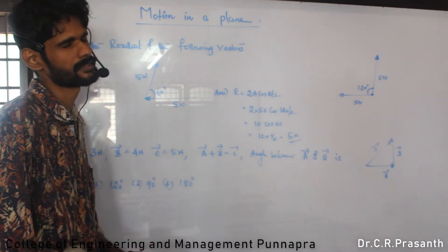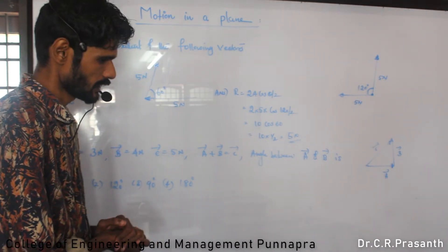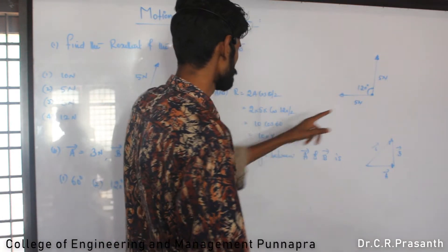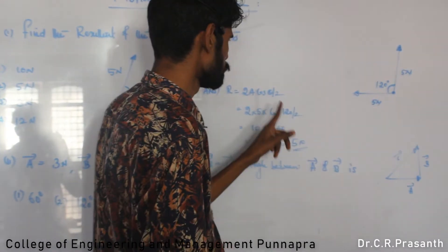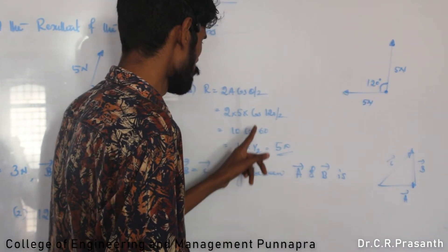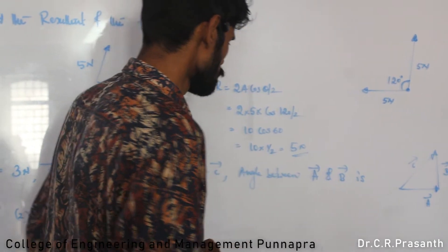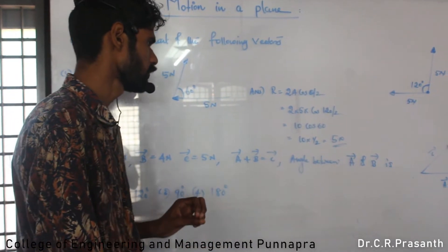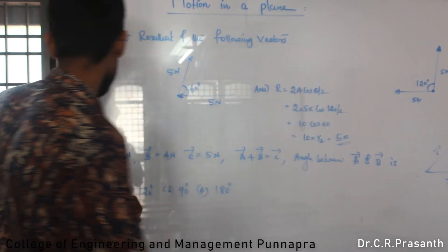The angle theta is the angle between the two vectors. The resultant is 2A cos theta by 2. 2 into A is 5. So 2 times 5 cos 60 by 2, which is 10 cos 30. This equals 5 root 3. So resultant is 5 root 3. Option 2.